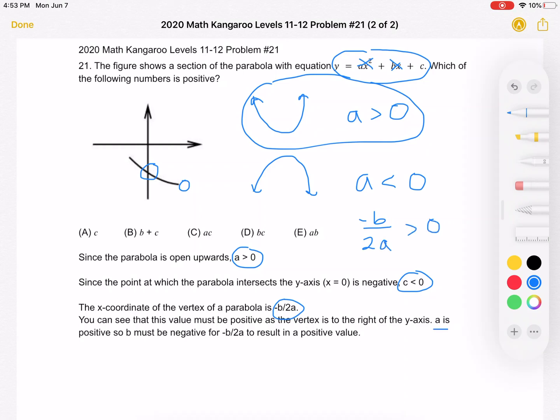And we already know that a is positive. So we need negative b divided by 2a, and again, 2a is a positive number. We need that quotient to be a positive number, which means that b must be a negative number. Again, so that we'll have negative times a negative and end up with a positive value. So b must be negative, less than 0.